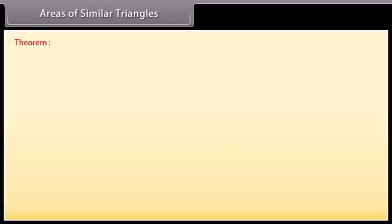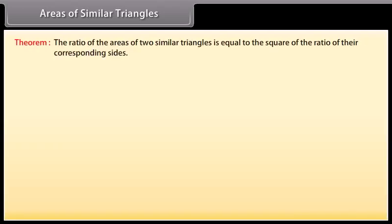Areas of similar triangles. Theorem: The ratio of the areas of two similar triangles is equal to the square of the ratio of their corresponding sides. Let us prove this theorem.